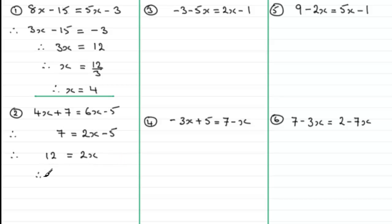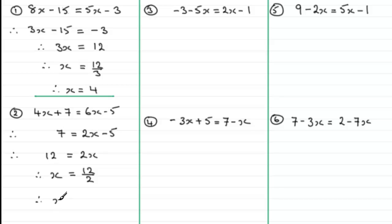That leaves me with 12 = 2x. I can clearly see that x equals 6, but to finish properly I divide both sides by 2: x equals 12 divided by 2, which gives x = 6.